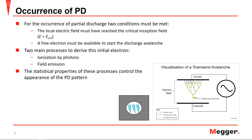For partial discharge to take place, two conditions must be met. First, the local electric field must have reached or surpassed the critical inception field. Second, a free electron must be available to start the discharge avalanche. There are two main processes to derive this initial electron: ionization by photons, in which a photon hits a gas molecule and frees an electron, and field emissions induced by electrostatic fields. These statistical properties control the appearance of the partial discharge pattern.